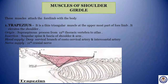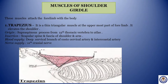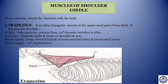Muscles of shoulder girdle. First: Trapezius. It is a thin triangular muscle at the uppermost part of the forelimb. It elevates the shoulder. Origin: supraspinous ligament from 12 thoracic vertebrae to atlas. Insertion: scapular spine and fascia of shoulder and arm. Blood supply: deep cervical branch of costo-cervical artery and intercostal artery. Nerve supply: 11th cranial nerve.